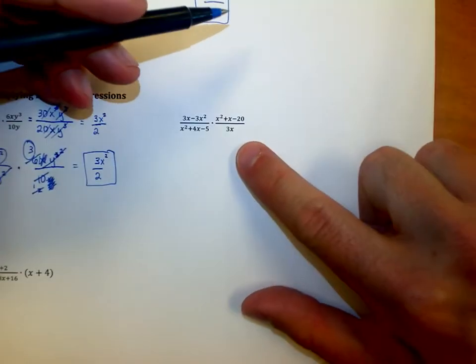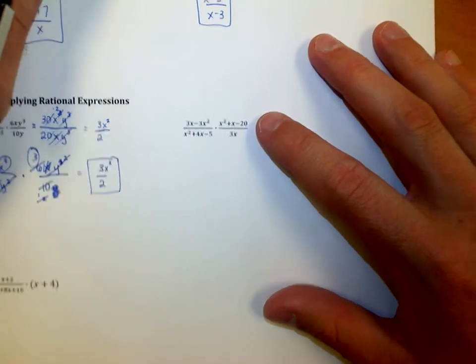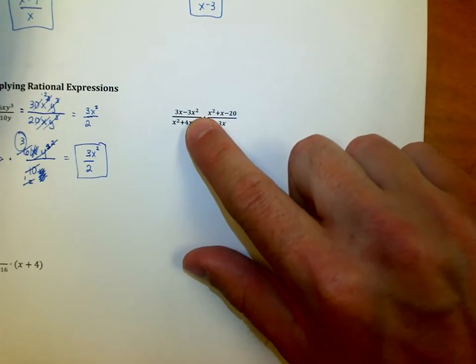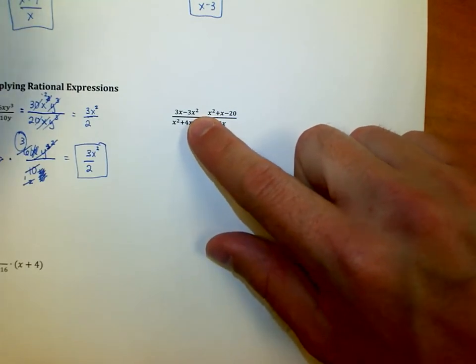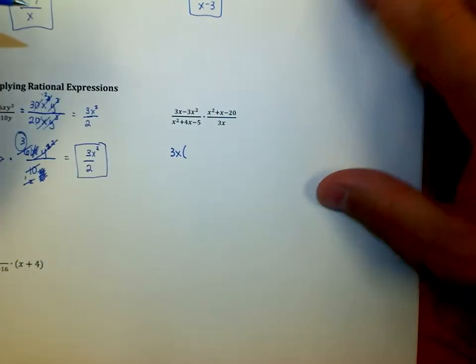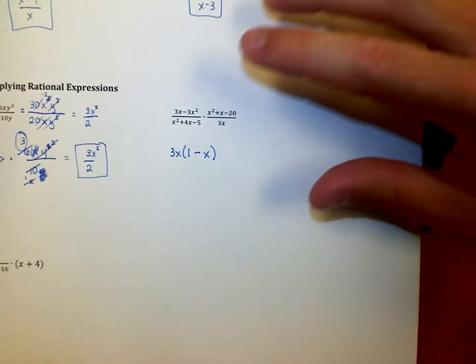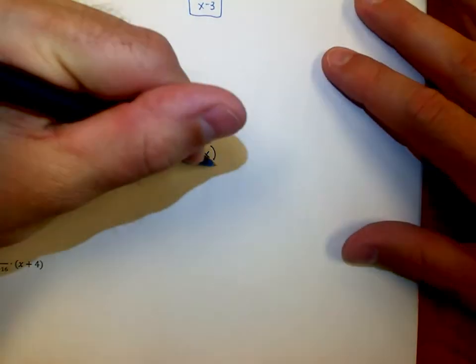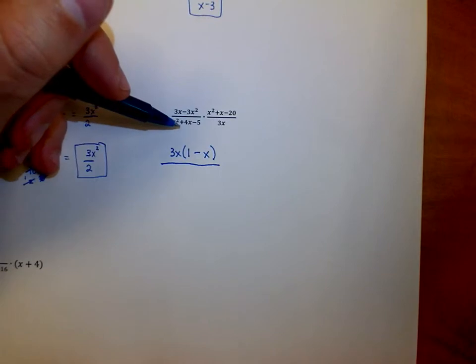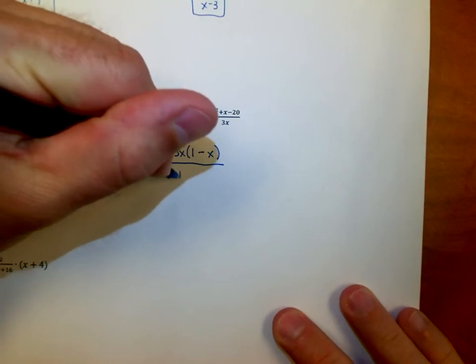The first step to either of these problems is to factor first. I look at the top left and say what do those have in common—they have a 3x in common. So I'm going to rewrite that as 3x times (1 - x) for the top left piece. The bottom is a mad minute problem: two numbers that add up to 4 that multiply to negative 5—I'm thinking (x + 5)(x - 1) there.